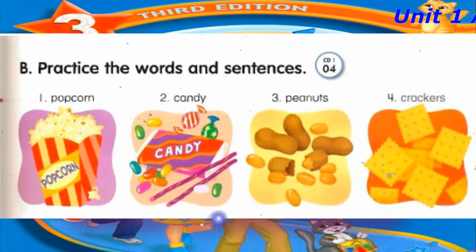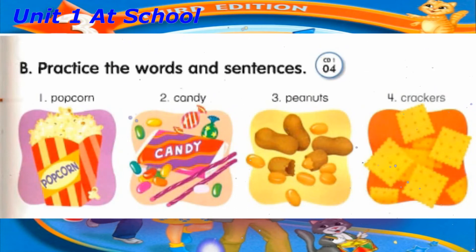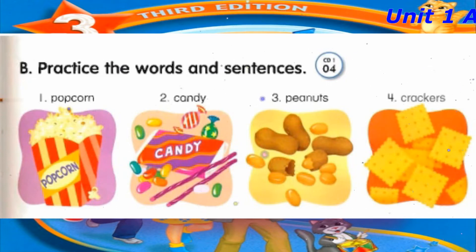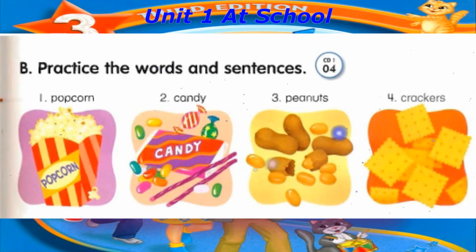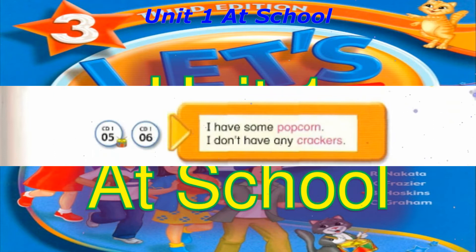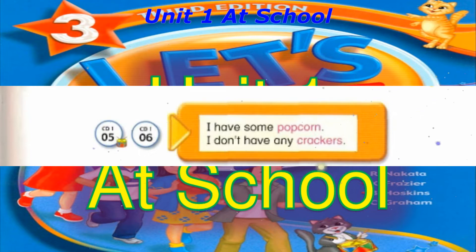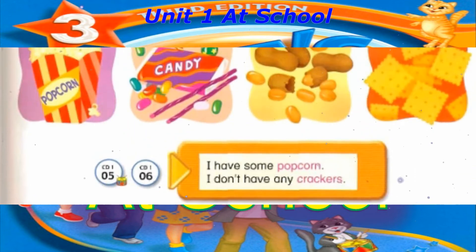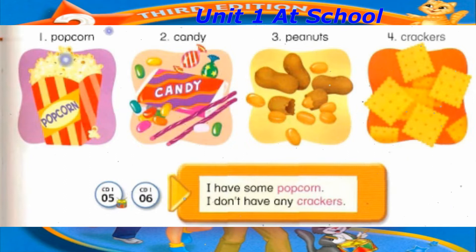Track 4. B. Practice the words and sentences. Number 1: Popcorn. Number 2: Candy. Number 3: Peanuts. Crackers. Track 5. I have some popcorn. I don't have any crackers. I have some popcorn.